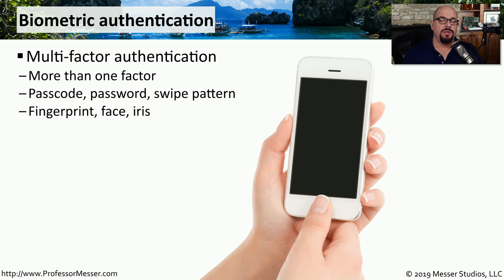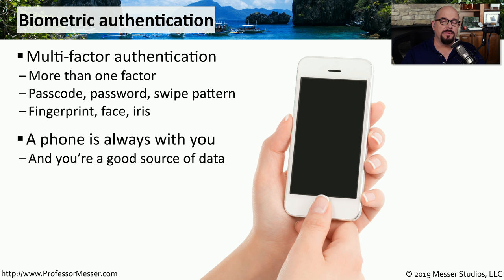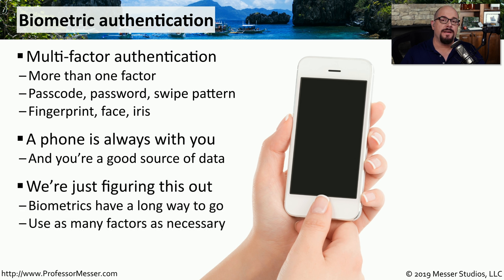On many mobile devices, you can use a PIN code to gain access to the device, but we're also combining different types of authentication factors. For example, you may use a face scan, a fingerprint scan, and a personal identification number to increase the security of these authentication methods. We tend to have our mobile device with us wherever we go, so using biometrics as a way to authenticate makes perfect sense. But biometrics aren't perfect, and people have found ways to circumvent the biometric readers on some of these mobile devices, so you want to be sure to use the right type of security depending on what you want to secure.